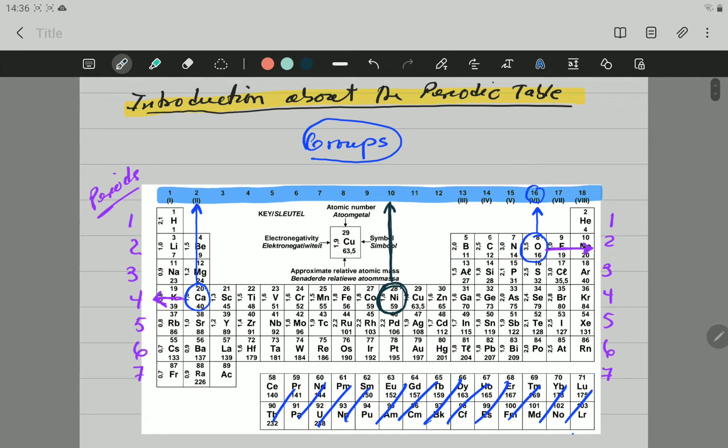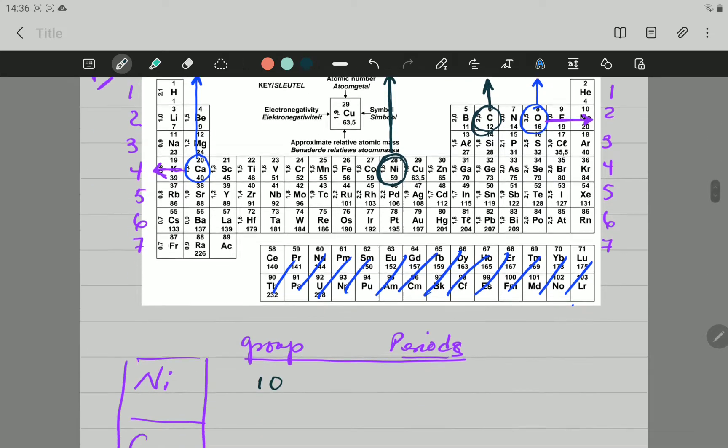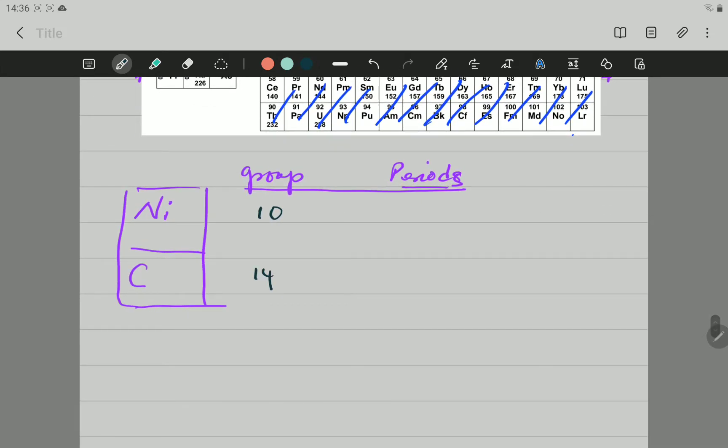So, here is Group 10. Carbon. You go to Carbon, it's there. Carbon is in Group 14. So, Carbon is in Group 14. Now, Period.